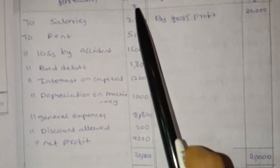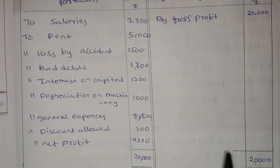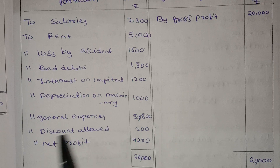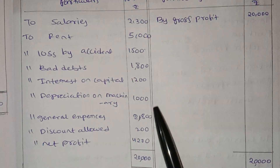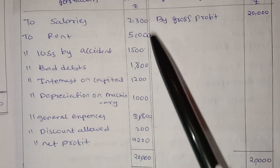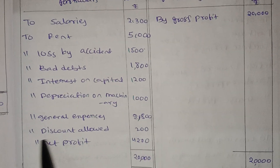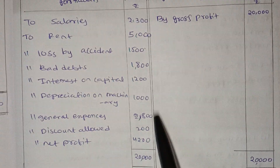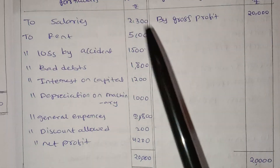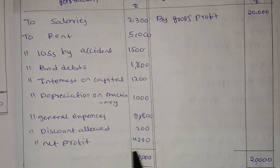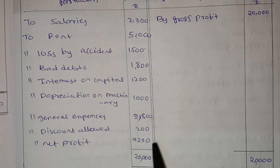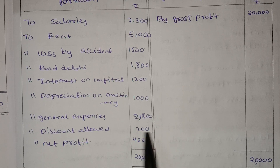Now, if you find the net profit, you will find the total of direct expenses. The total is $15,800. Minus $20,000 — $20,000 minus $15,800 is $4,200. You will find the net profit of $4,200.